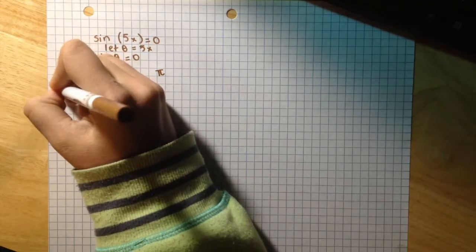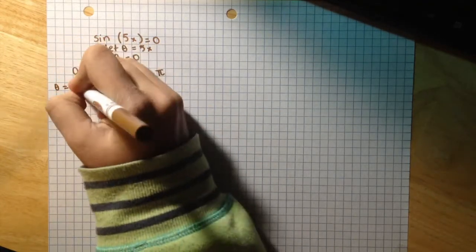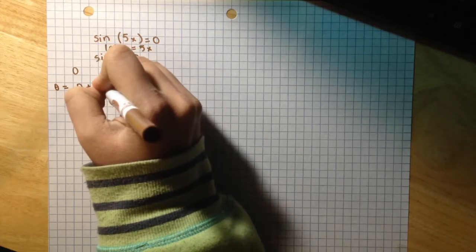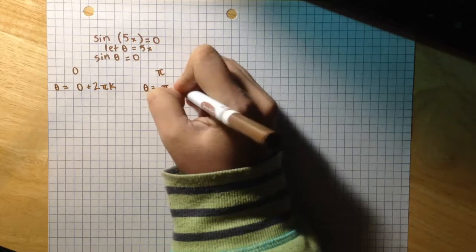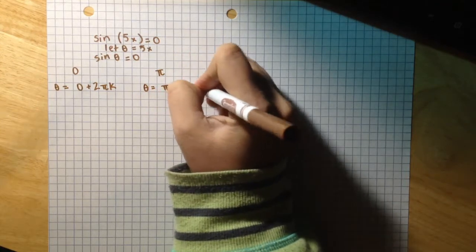So theta equals 0 plus 2πk, and theta equals π plus 2πk.